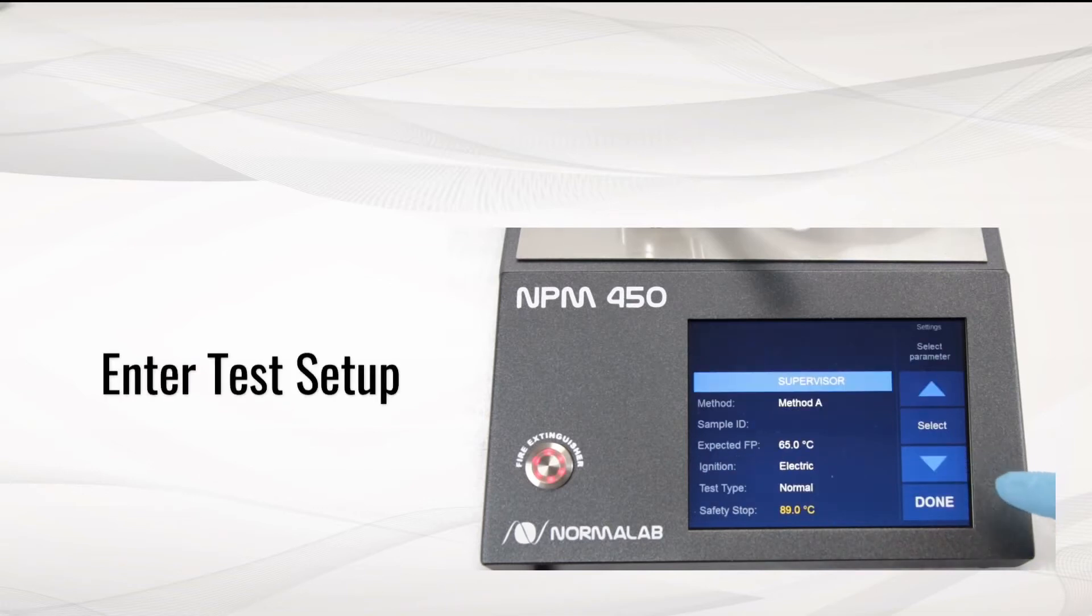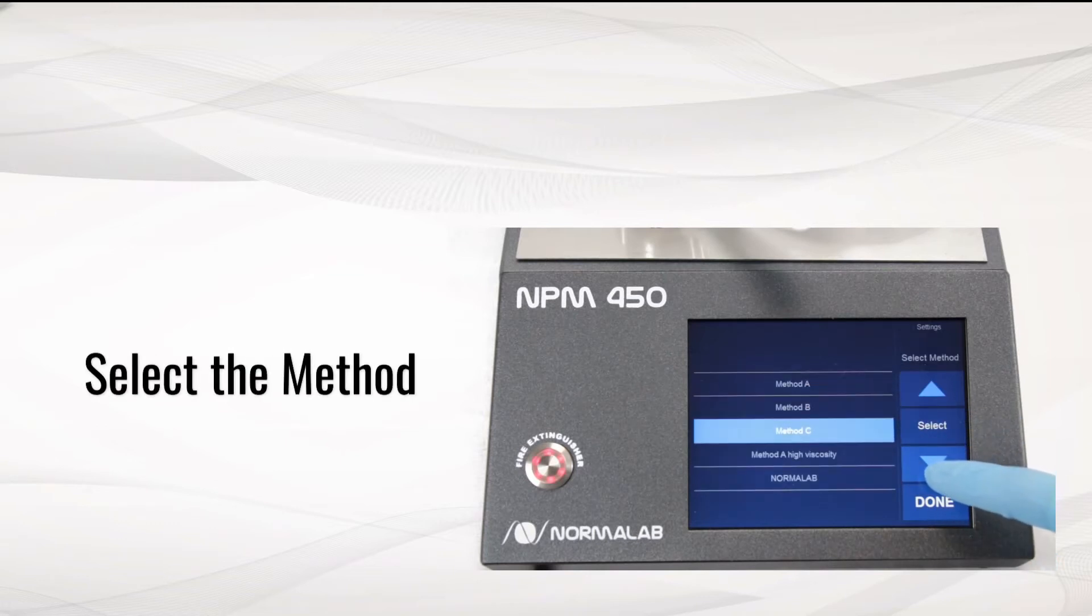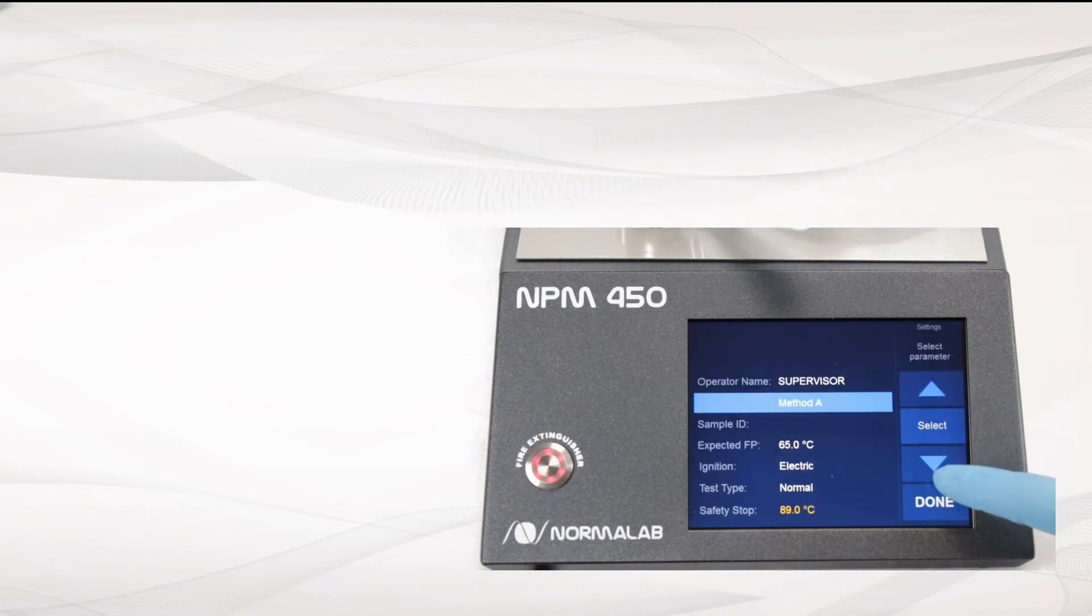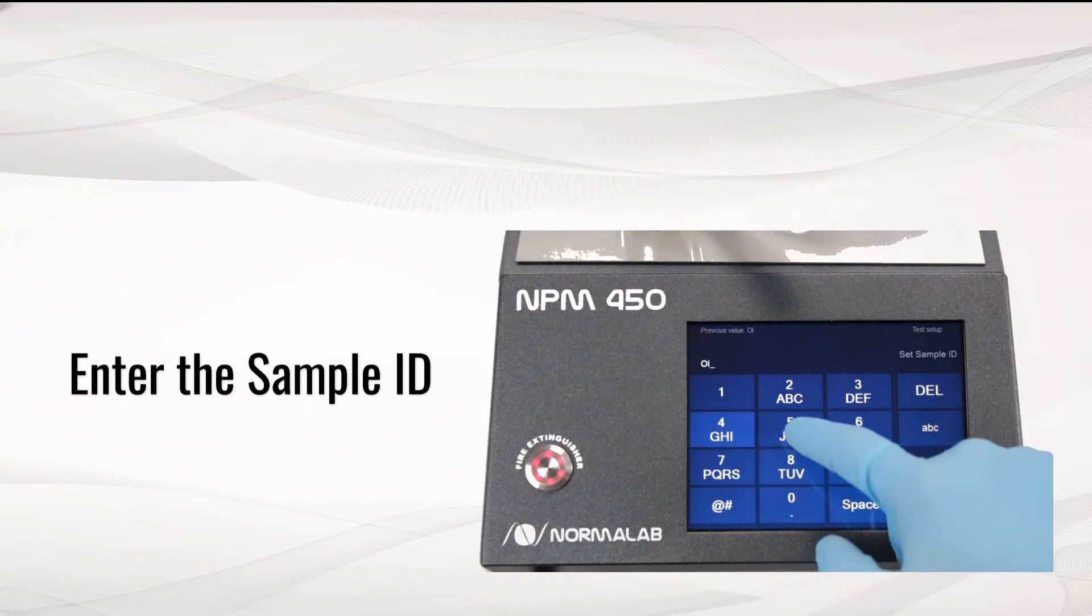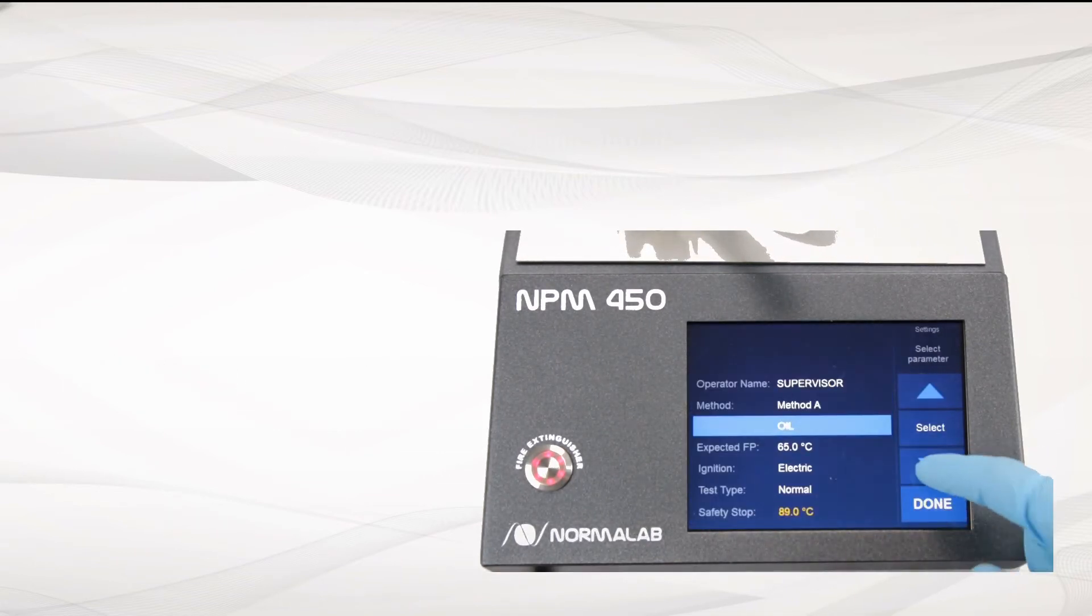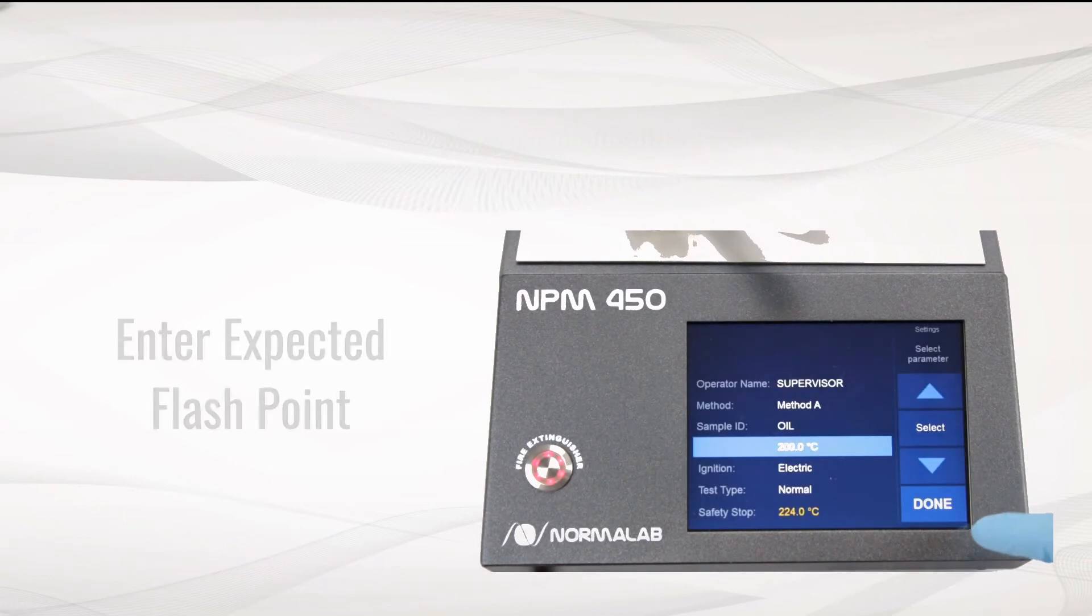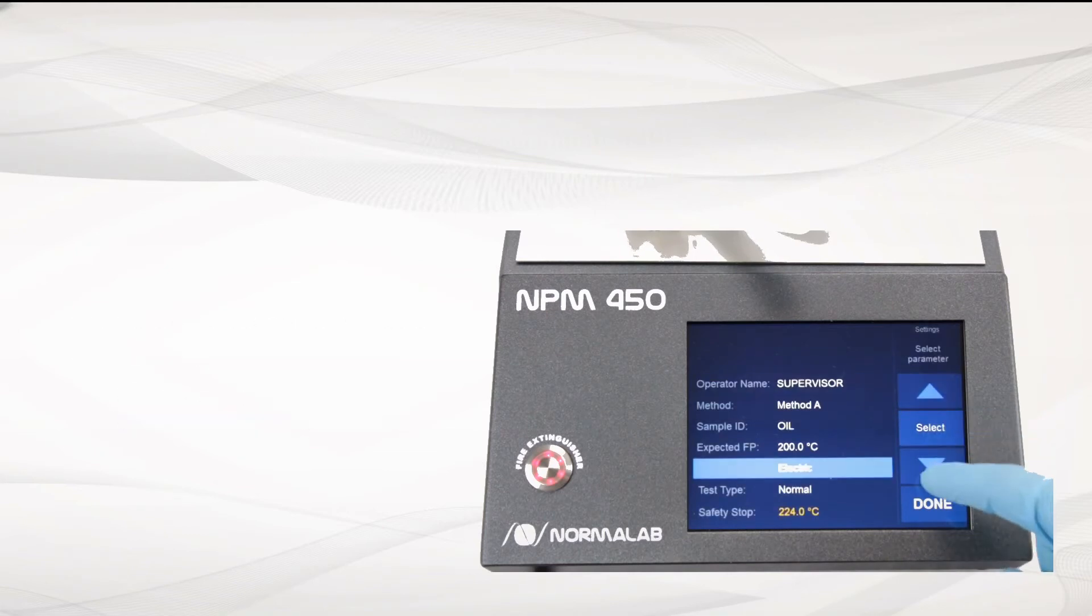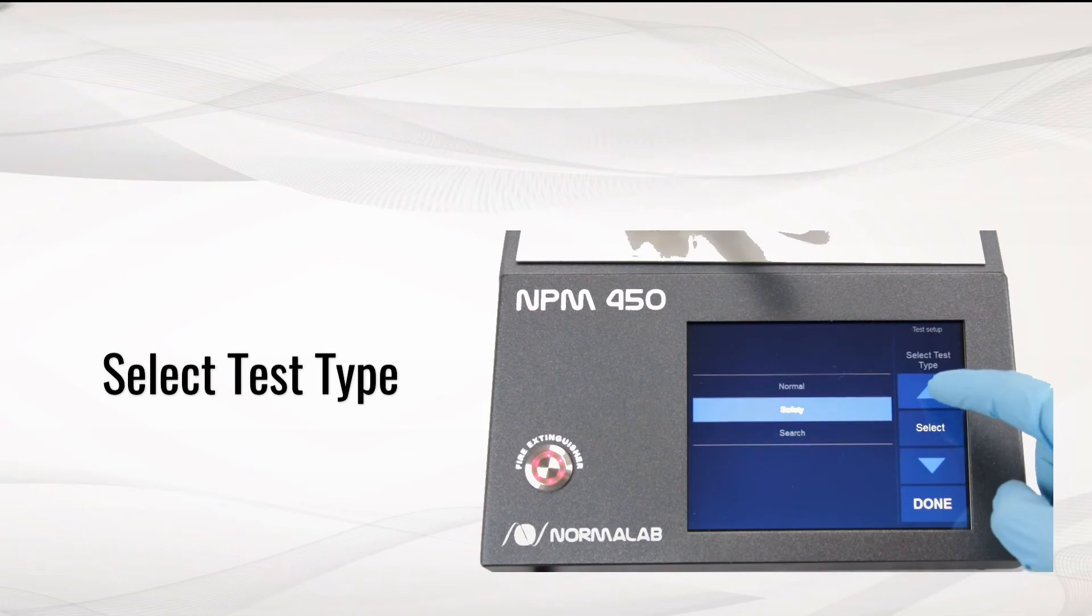Enter test setup. Select your method from the list. Enter your sample ID. Enter the sample expected flashpoint. Select the ignition type for the test between gas and electric. Select the test process: normal, safety, or search mode.